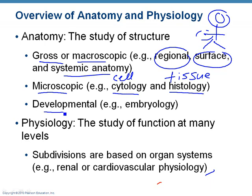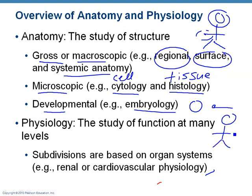We may talk about developmental anatomy, which we call embryology — studying how an organism grows and what changes. Thinking back to basic biology, we start with an egg and a sperm. Egg and sperm come together to form a baby, and a lot of steps go through that process before the baby is formed and becomes an adult.